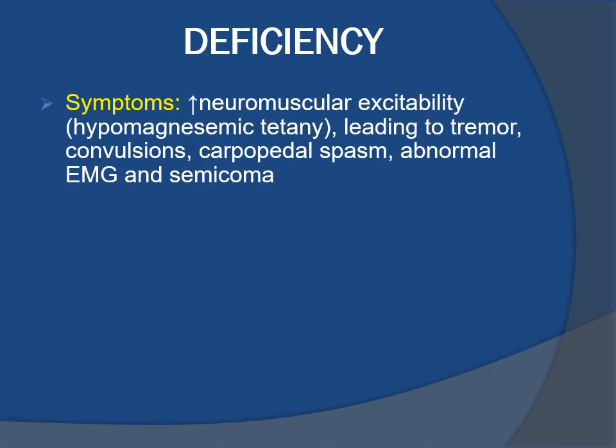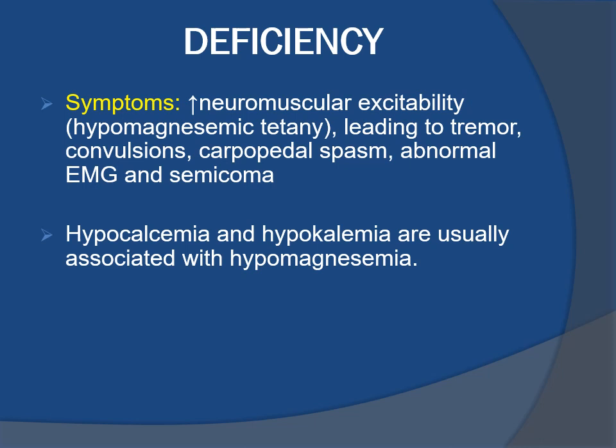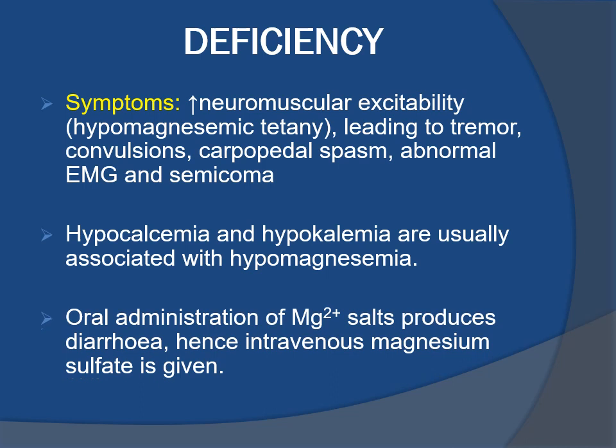Symptoms of deficiency include increased neuromuscular excitability, also known as hypomagnesemic tetany, leading to tremors, convulsions, carpopedal spasm, abnormal electromyogram, and semicoma. Hypocalcemia and hypokalemia are usually associated with hypomagnesemia. Oral administration of magnesium salts produces diarrhea, hence intravenous magnesium sulfate is given as treatment.